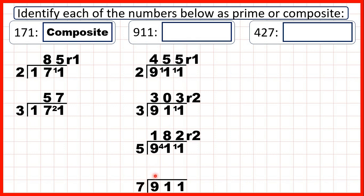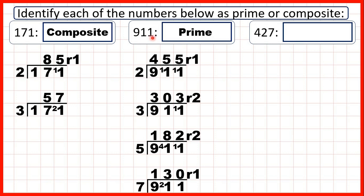9 divided by 7 is 1 remainder 2, 21 divided by 7 is 3, and 1 divided by 7 is 0 remainder 1. So we've divided 911 by the first four prime numbers. Because we've got a remainder for all of our answers, we know that 911 must be a prime number. Its only factors must be 1 and 911.